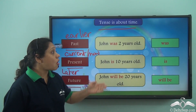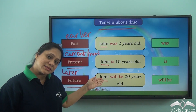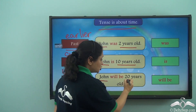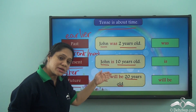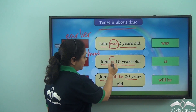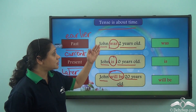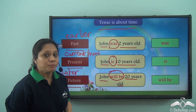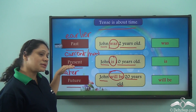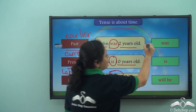If you notice, all three sentences are telling us about John — he is two years old, ten years old, twenty years old. But what is really changing in these sentences? Only the be verb: 'was', 'is', 'will be' is changing across the three sentences. So the three be verbs are telling us about John in different times. 'Was' tells us about past, 'is' tells us about present, and 'will be' tells us about future.